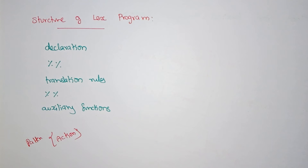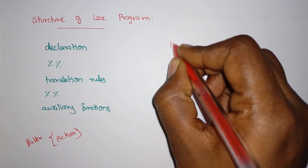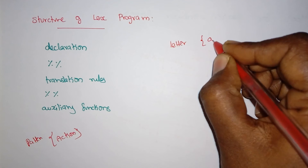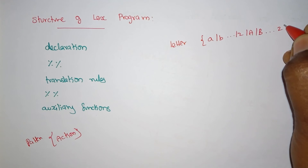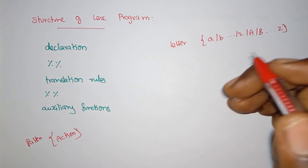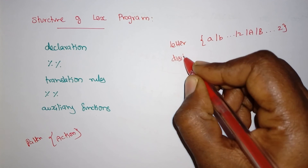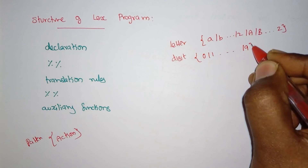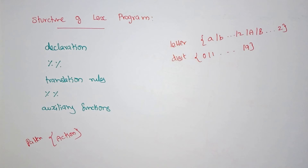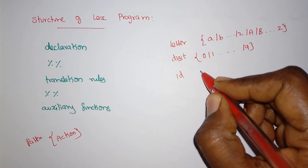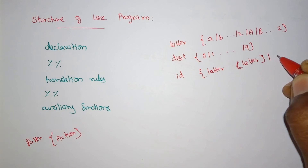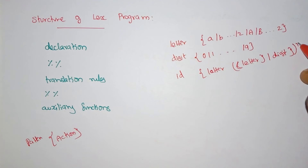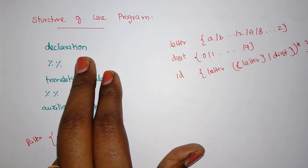Coming to the declaration portion — let's take an identifier as an example. An identifier is made up of letters and digits. First, we define what a letter is: letter contains 'a' through 'z' (lowercase) or 'A' through 'Z' (uppercase). For digit, you write 0 through 9. For an identifier 'id', it should start with a letter followed by a letter or digit with the Kleene star, like: id = letter (letter | digit)*.